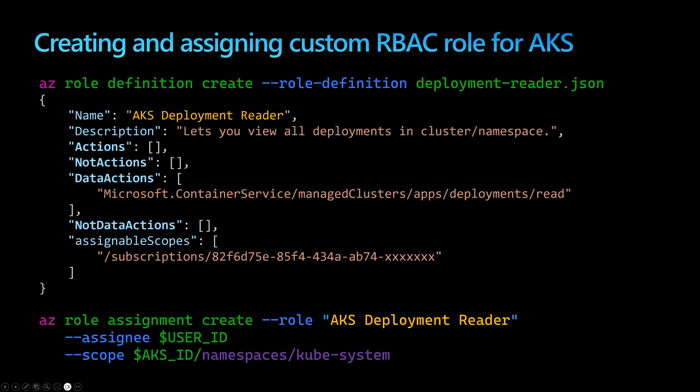We define this role in a JSON file, then send it to Azure RBAC using the command az role definition create with the role definition flag and the name of your JSON file — Azure will then recognize this role. To assign it to an AKS cluster, use the command az role assignment create with the role name and the assignee, whether that is your user ID or an Active Directory group. You then specify the scope, which could be your AKS cluster. Importantly, for the scope you can specify all namespaces in the cluster or a specific namespace like kube-system. Note that today this cannot be done through the Azure portal — only through the command line, Terraform, or Bicep. Follow along next for a demonstration.